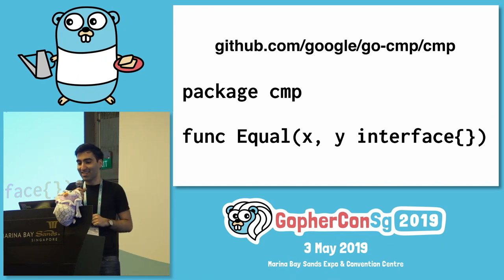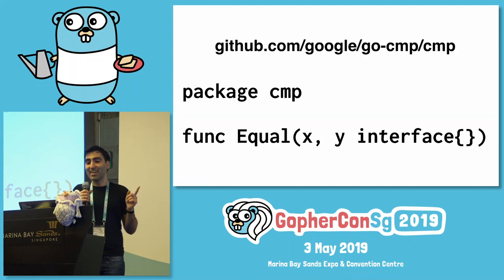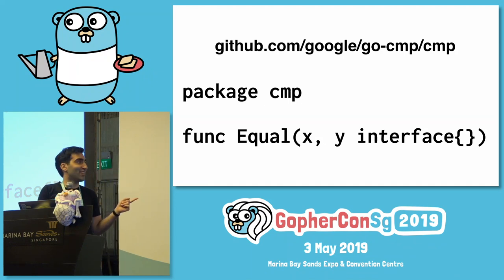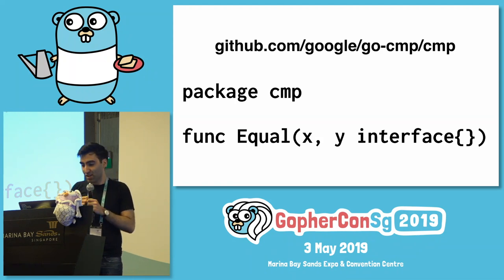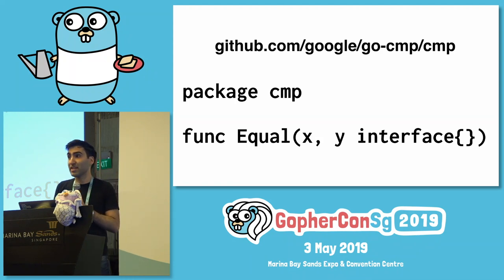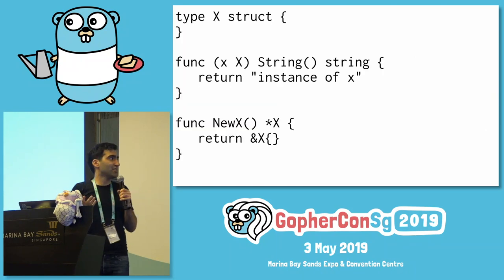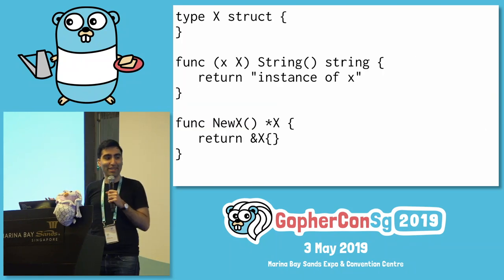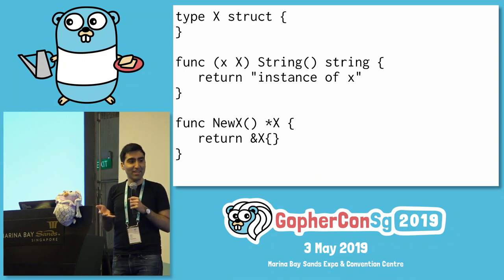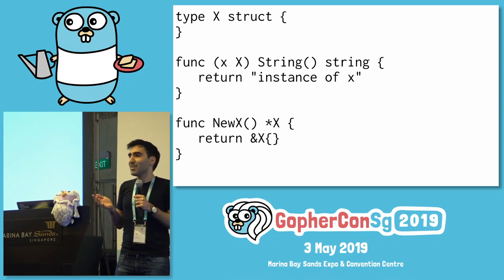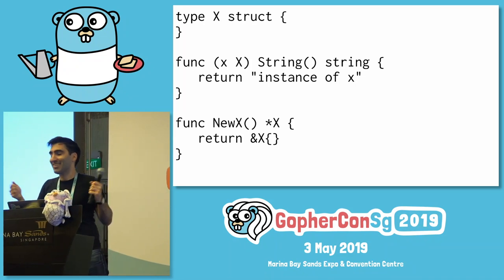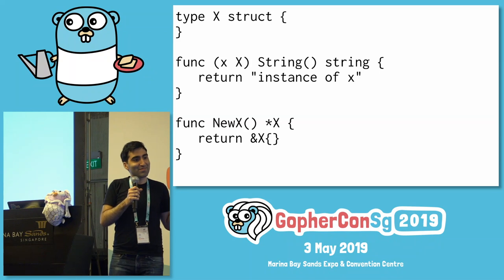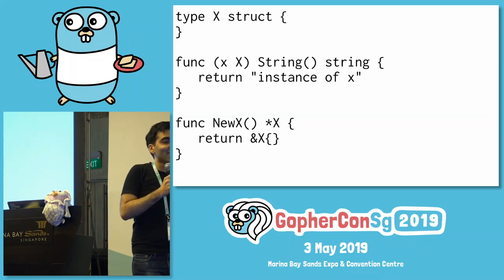Because Go doesn't have generics, cmp has to take two empty interface values, but they're supposed to be the same type. Now let's take a look at some code that's using this package. Here's some pretty standard stuff. I have a struct X.